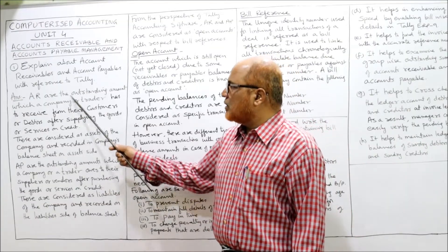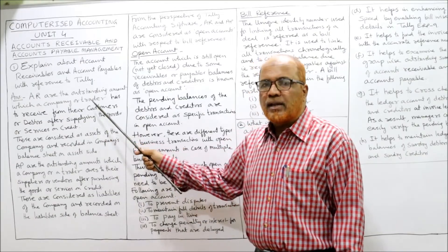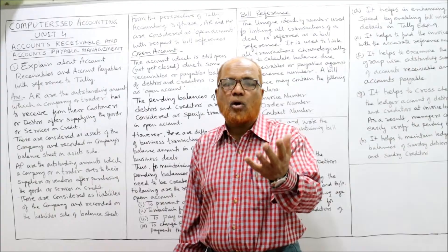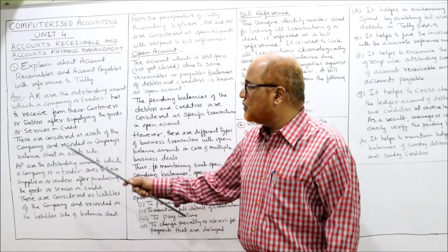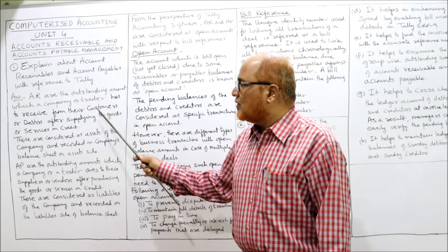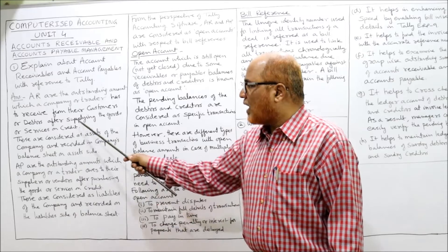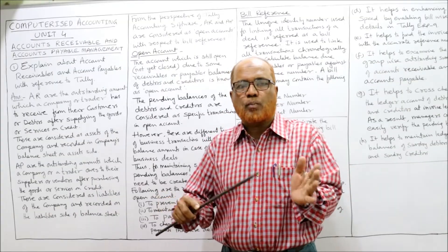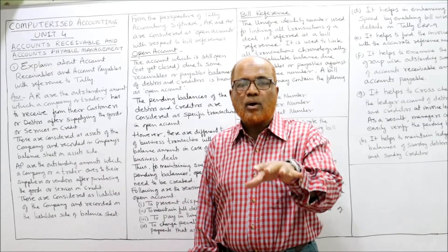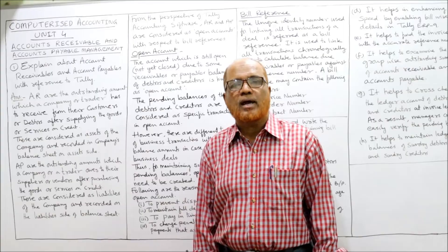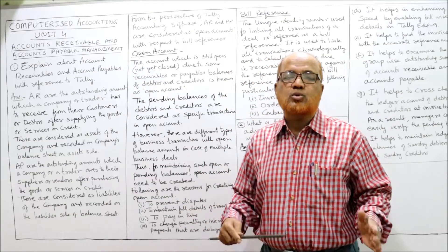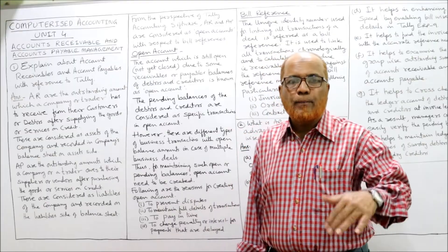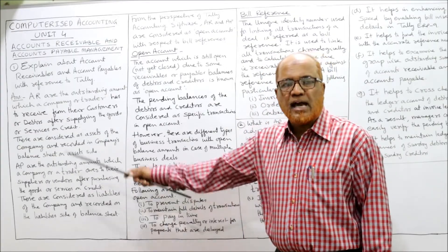Specifically, account receivable is the outstanding amount which a company or trader has to receive from their customers or debtors — also called debtors — after supplying goods or services on credit. Account receivable is an asset to the company; that's why it is shown in the balance sheet on the asset side.